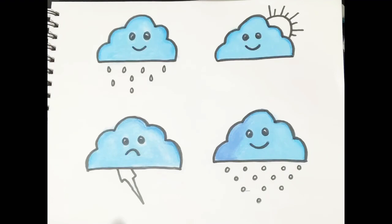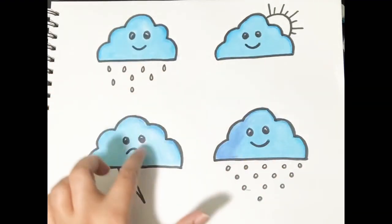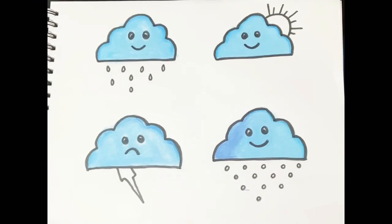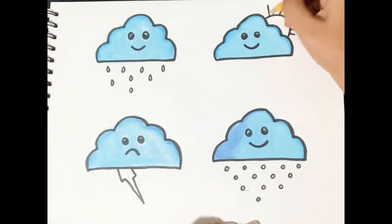So I completed the coloring part. So we have colored all with the light blue color. All the clouds with the light blue color. And now we are left with the sun and the thunderstorm. So in the sun we'll do yellow color.